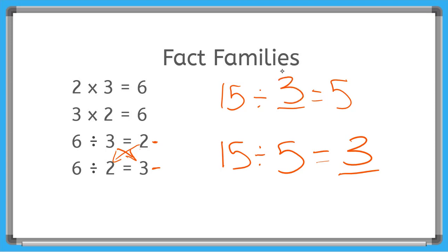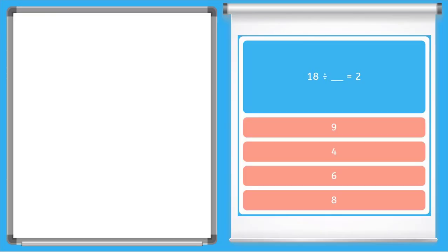Let's try this with a couple problems from our game. My first problem here is 18 ÷ unknown = 2. So we're going to use the other division problem in this problem's fact family to find our unknown. So I will switch the unknown and the 2.